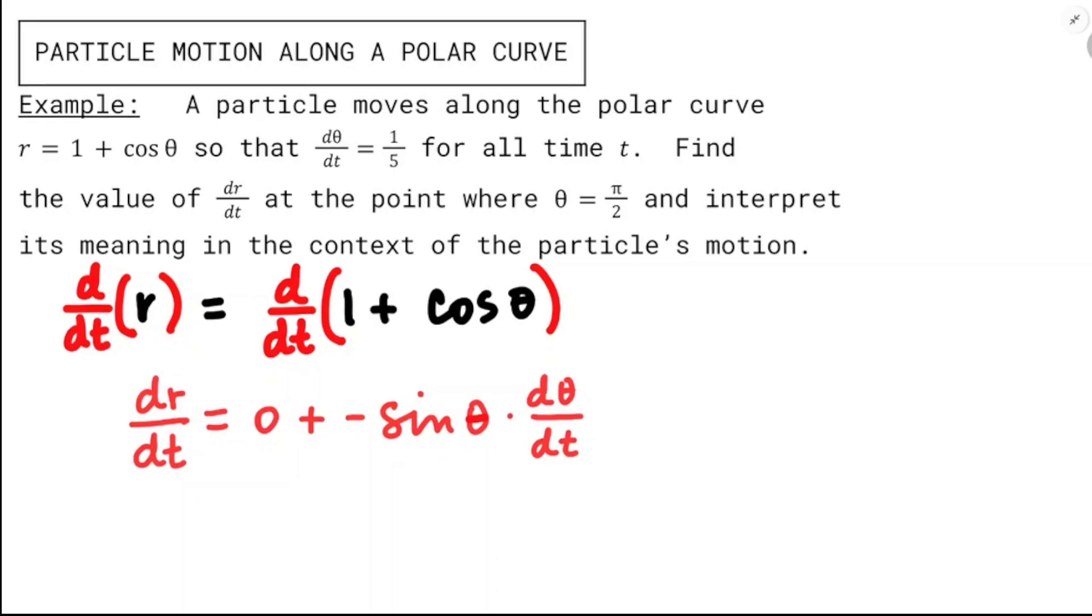Now I'm going to plug in all the stuff I know, and that would be θ is π/2, and dθ/dt is 1/5, and I get negative sine of π/2, so that's negative 1 times a fifth, that's negative 1/5.